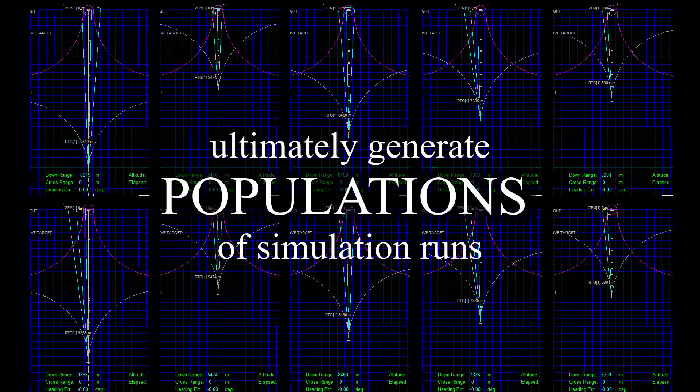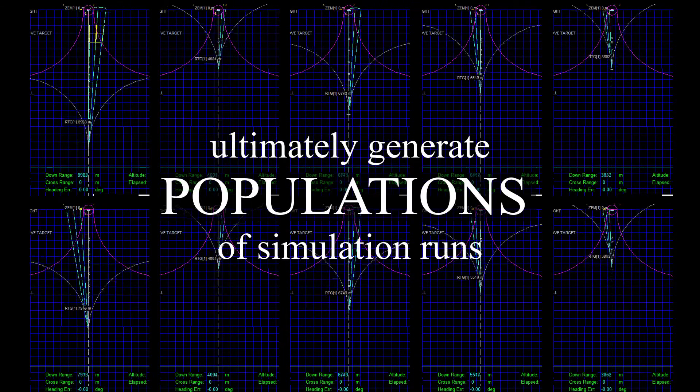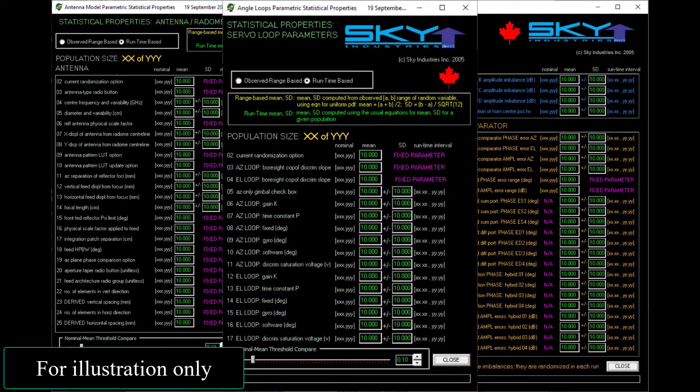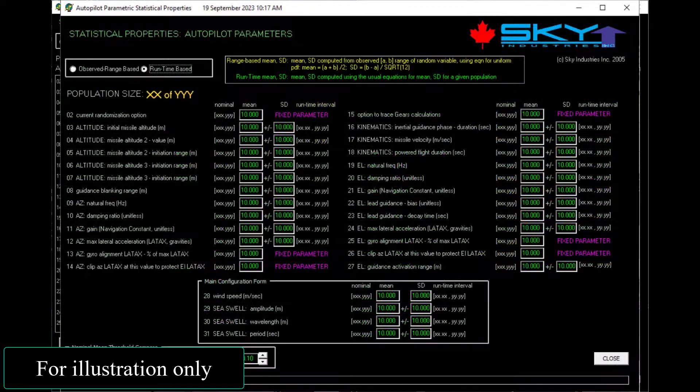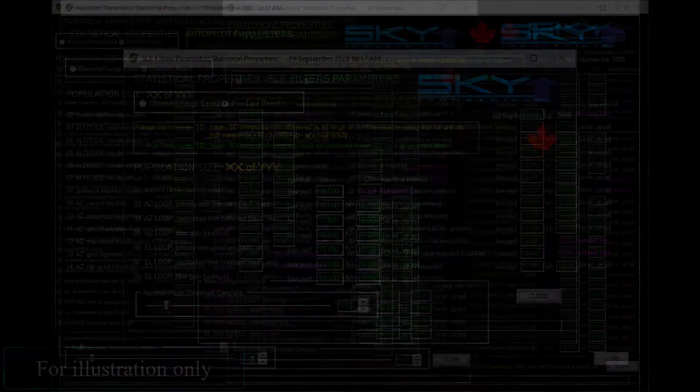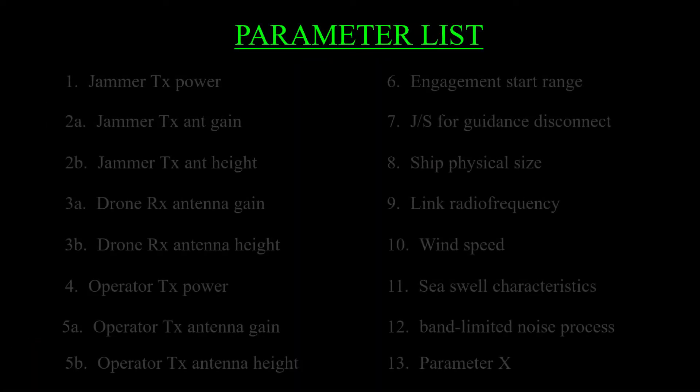We're going to do a bunch of simulations. So we got to specify what numbers do we use for the attack. And every parameter that we're going to specify has to be assigned a nominal value and a variability. And here are the parameters I'd use for this kind of problem.